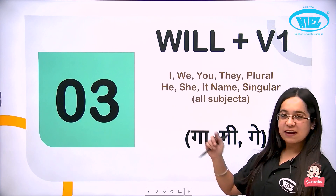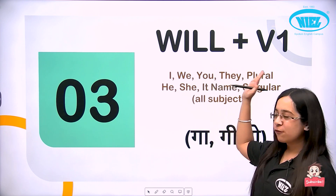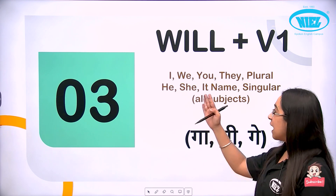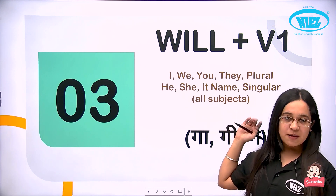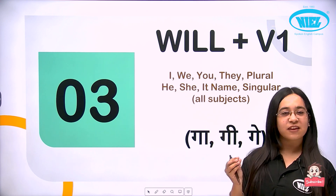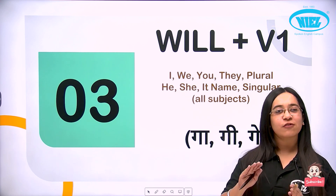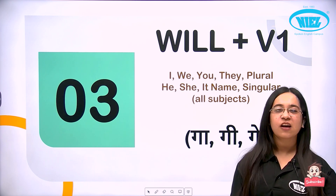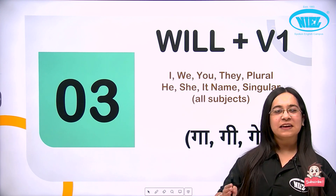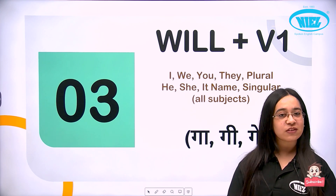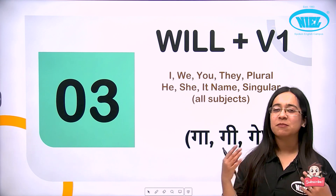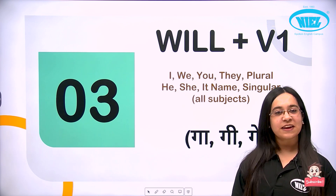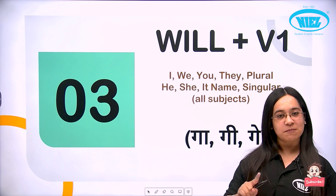Our third rule is will plus first form. There is only one helping verb here, so we use will with all subjects — I, we, you, they, and plural subjects, as well as he, she, it, and any singular subject. In present tense we had do and does separately, but will is just one — so no tension about singular or plural. With all subjects we use will plus first form.